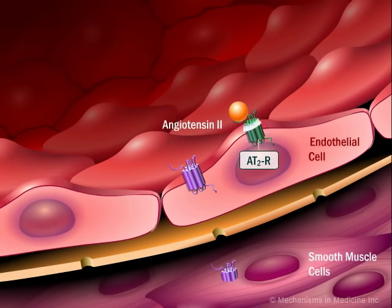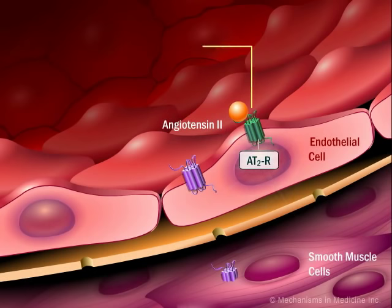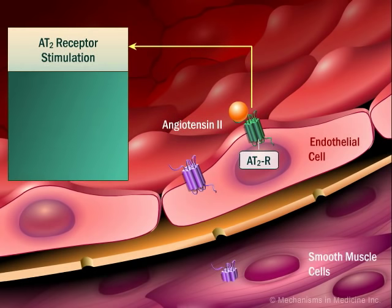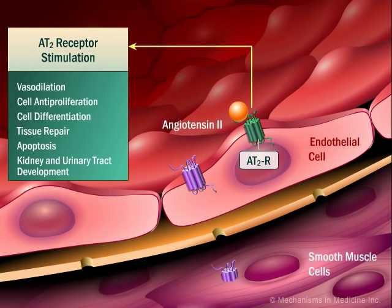Angiotensin-2 type 2 receptors can be found in low levels mainly in the uterus, adrenal, central nervous system, heart, and kidney. AT2 receptors appear to counteract the effects of AT1 receptor stimulation.